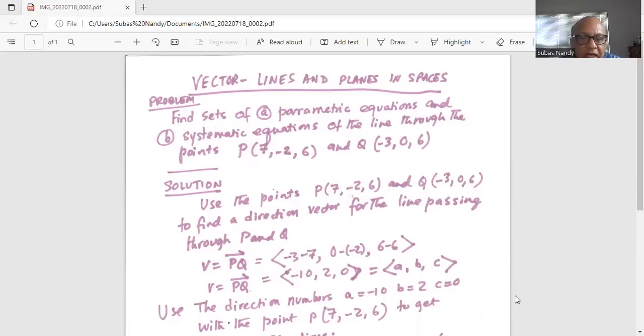Hence the directional numbers are A is minus 10, B is 2, and C is 0.